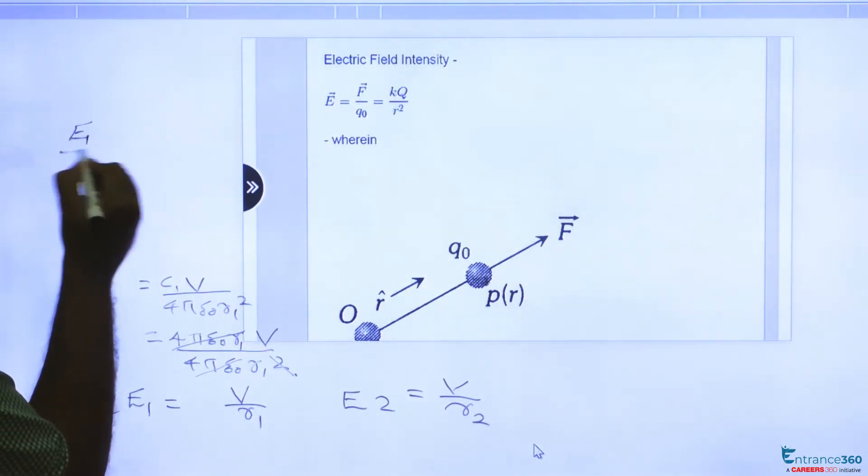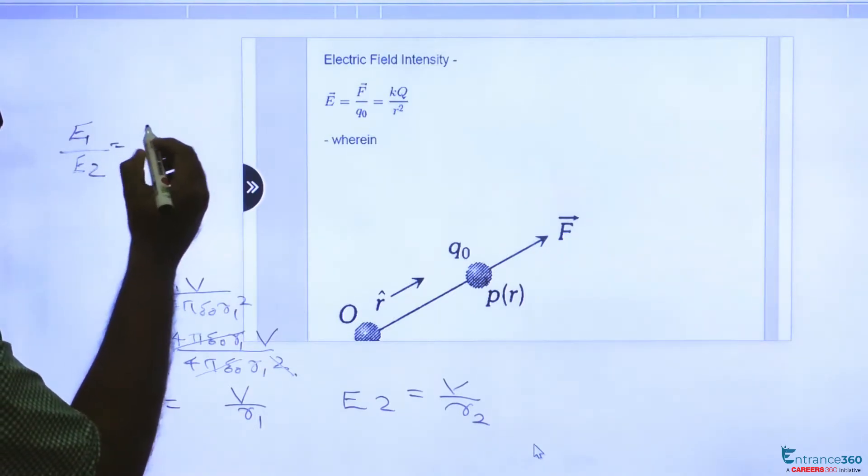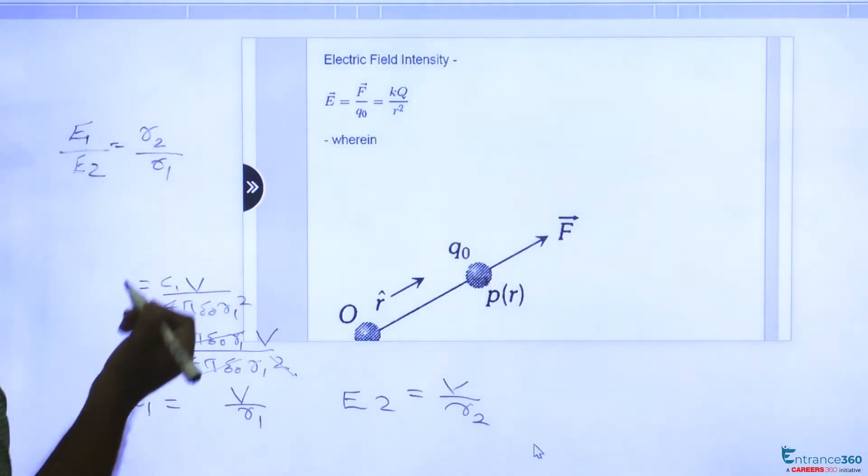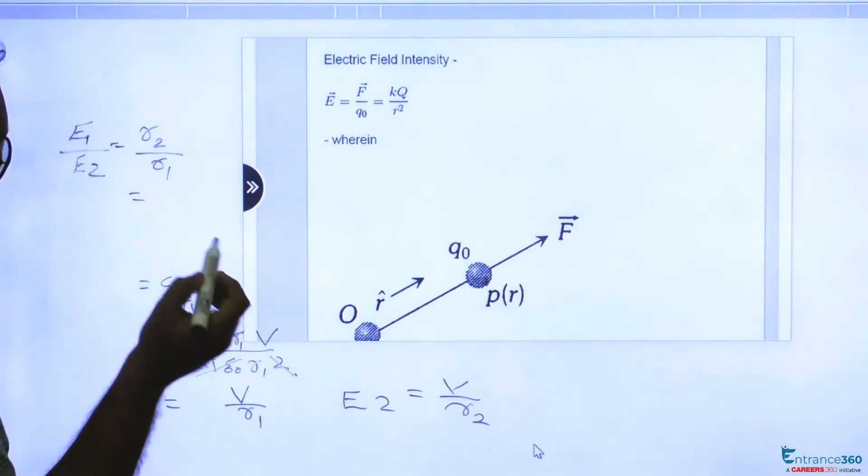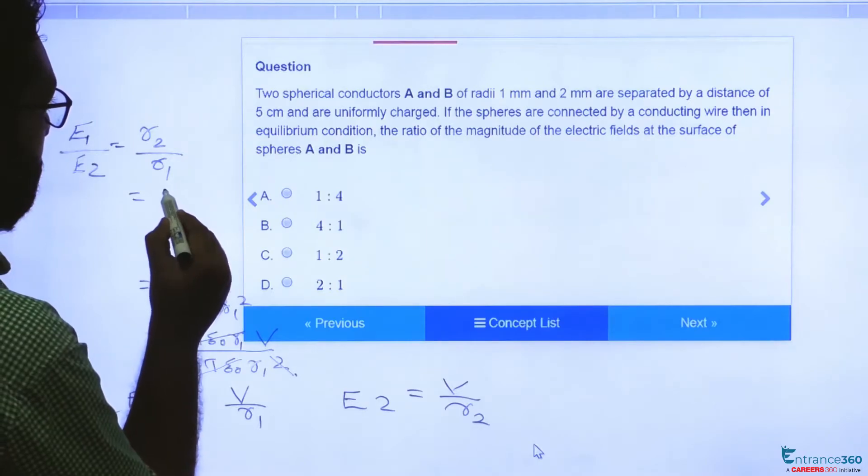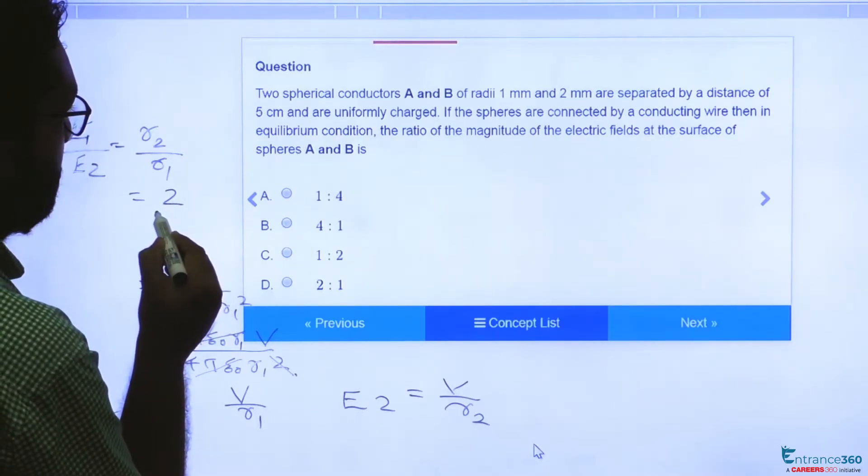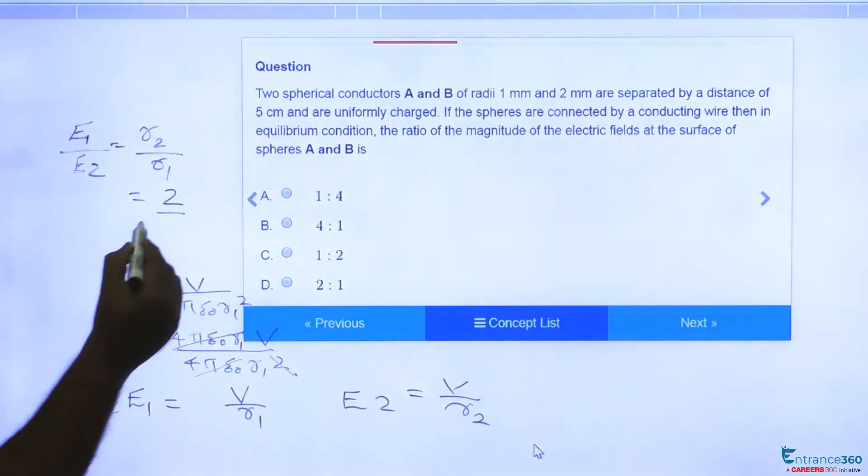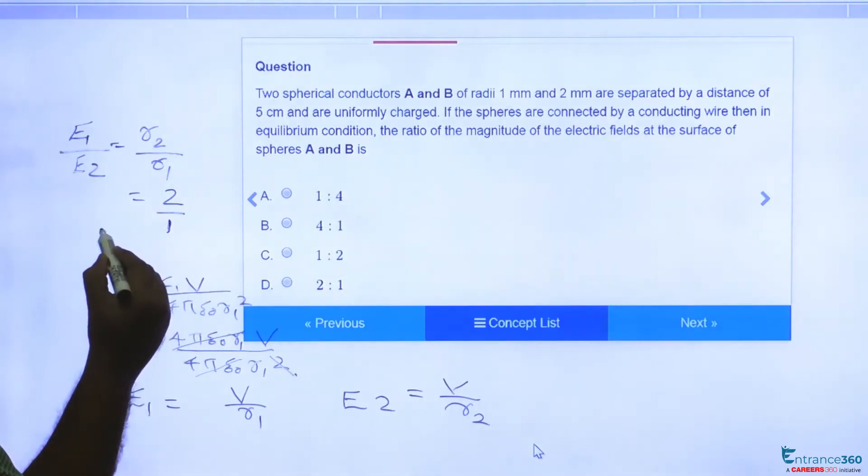E1 by E2 equal to r2 by r1. r2 is given as 2 mm and r1 is given as 1 mm, so answer will be